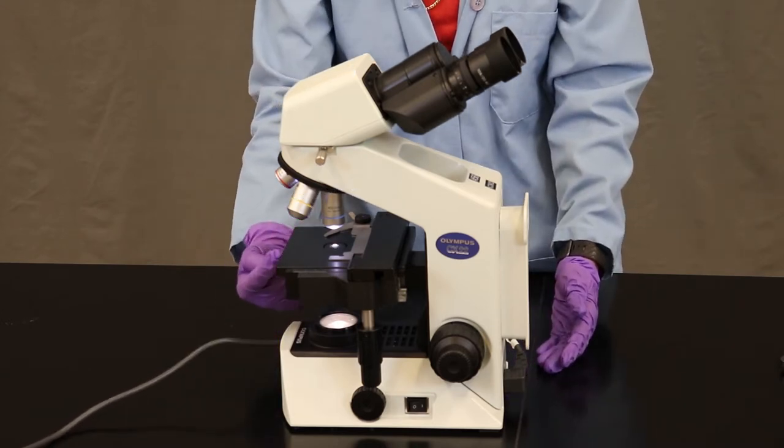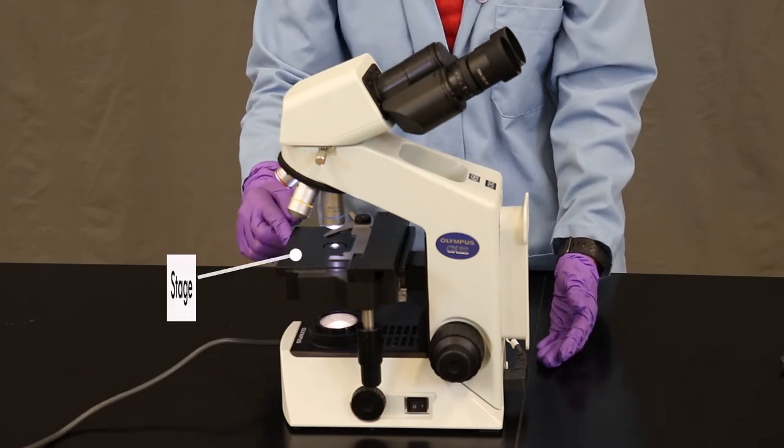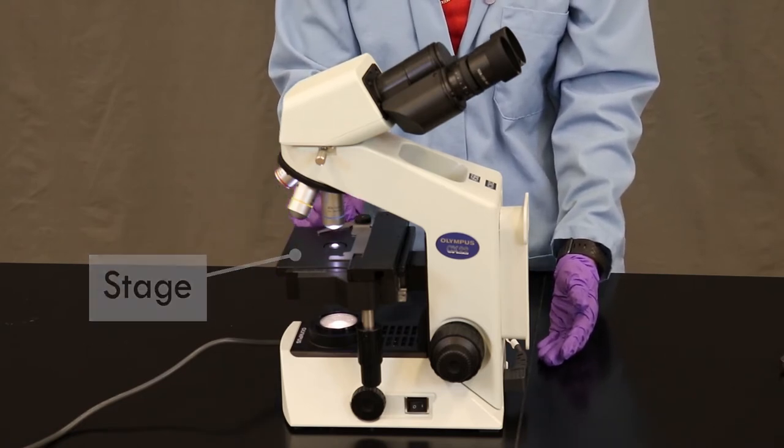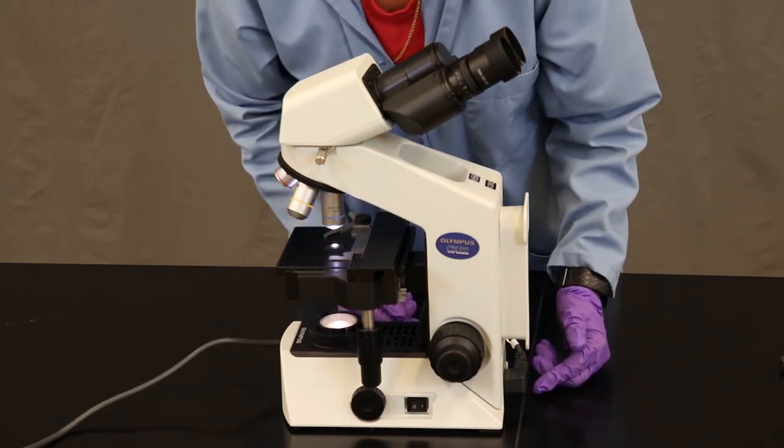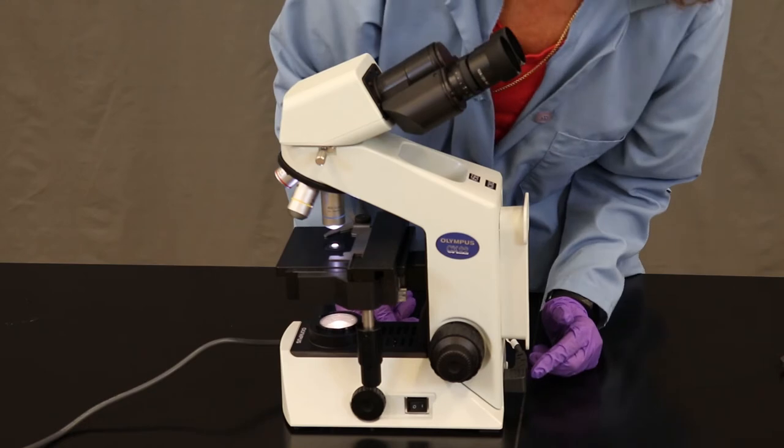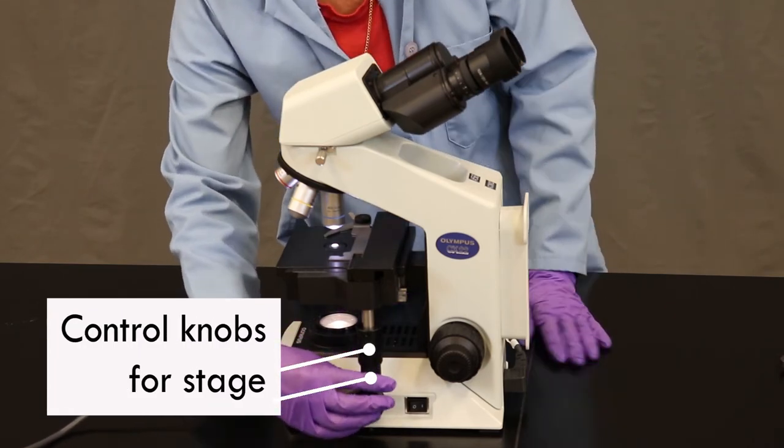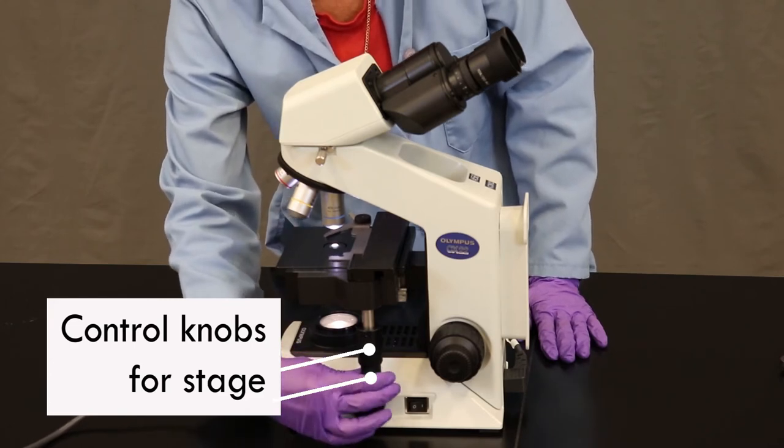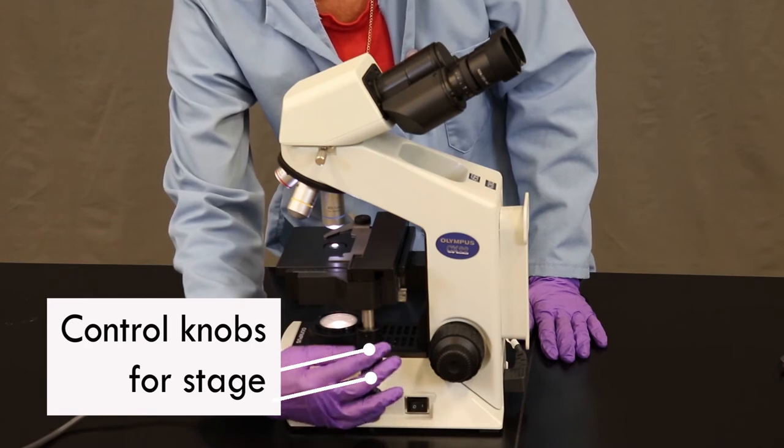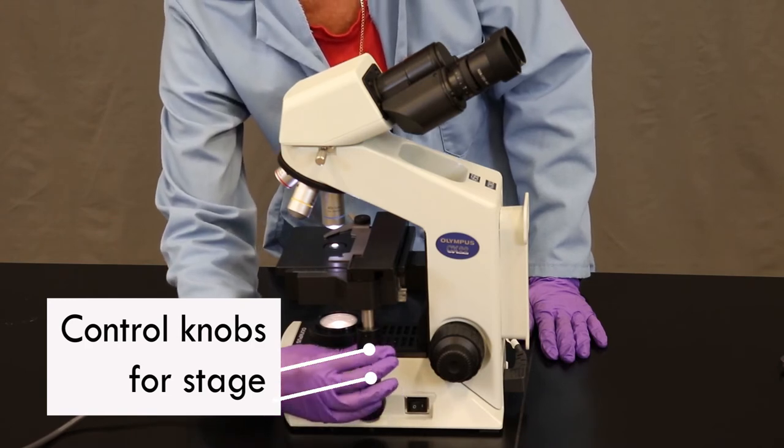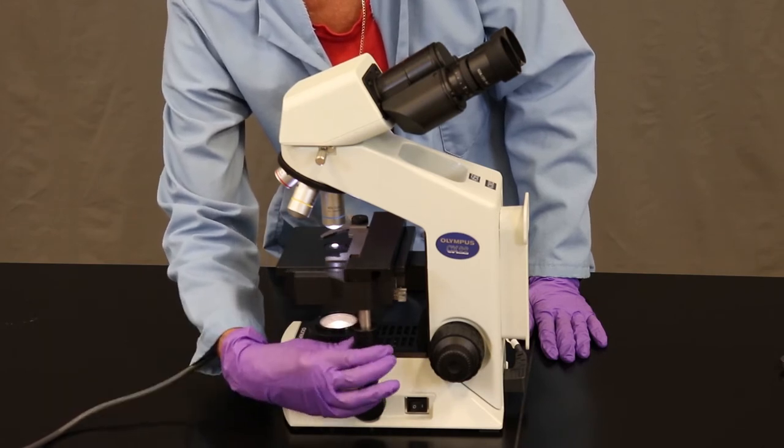This platform here is the stage. And it holds the slide in place. And you can move the slide around using these knobs. And these knobs go in two different directions. The bottom one goes left-right as you're looking through the microscope. And the top one goes back and forth towards and away from you when you're looking through the microscope.